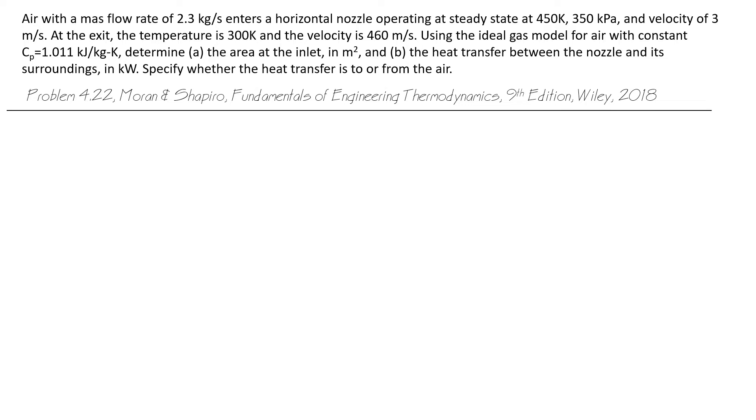Using the ideal gas model for air with constant C sub P equaling 1.011 kilojoules per kilogram Kelvin, determine: A, the area at the inlet in square meters, and B, the heat transfer between the nozzle and its surroundings in kilowatts. Specify whether the heat transfer is to or from the air.